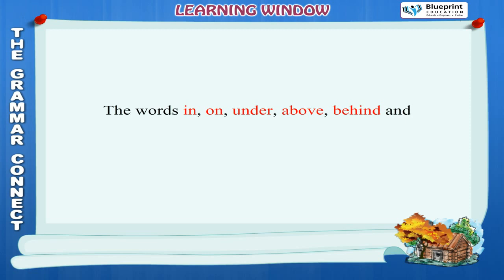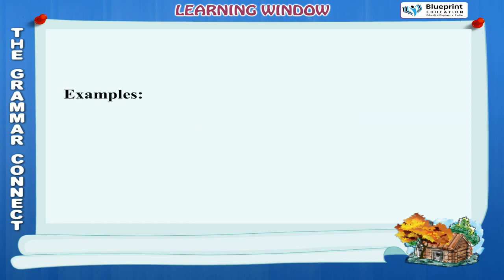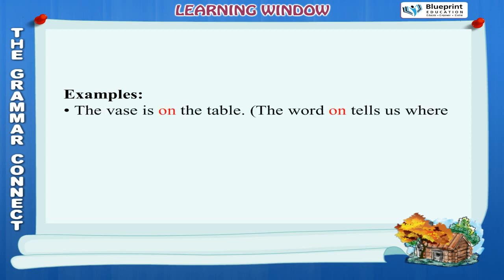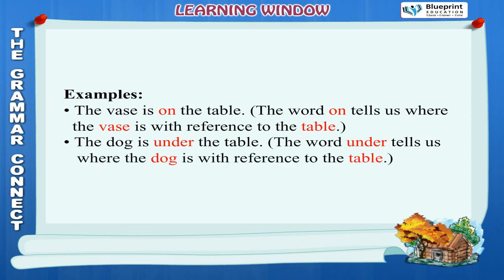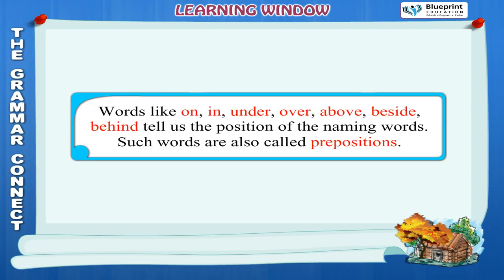The words in, on, under, above, behind and beside tell us the position of an object, a person, or a thing. Examples: The vase is on the table — the word 'on' tells us where the vase is with reference to the table. The dog is under the table — the word 'under' tells us where the dog is with reference to the table. Words like on, in, under, over, above, beside, behind tell us the position of the naming words. Such words are also called prepositions.